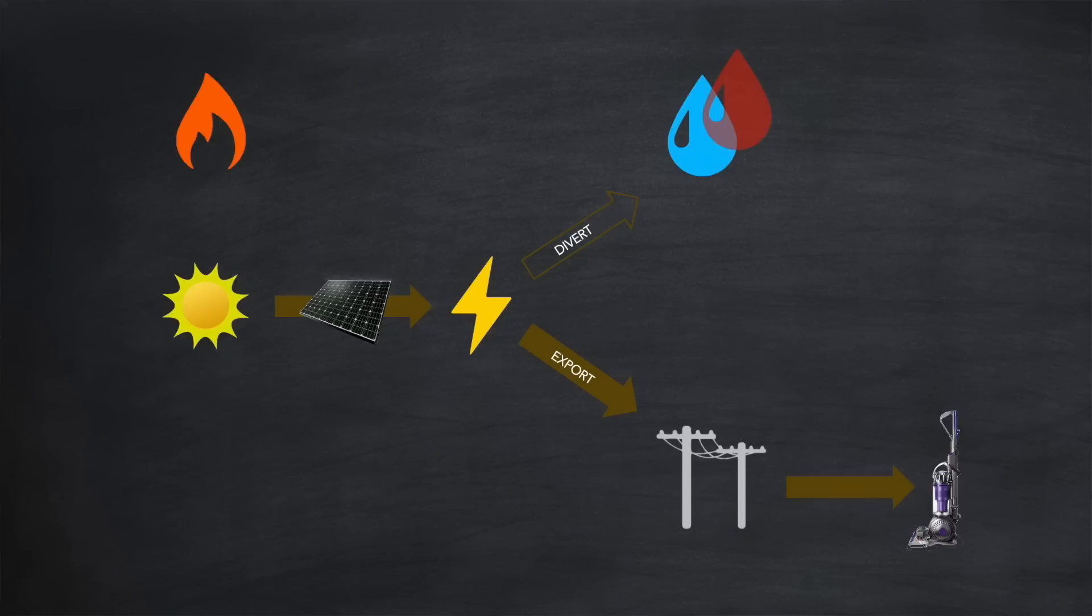But you'll still need to heat your water. And if you're not using your excess solar to do that, you'll likely have to use fossil fuel. Let's assume a gas boiler in our example. If instead of exporting, you choose to divert your excess solar to heat your water, then your neighbour will need to power their vacuum cleaner from another source.